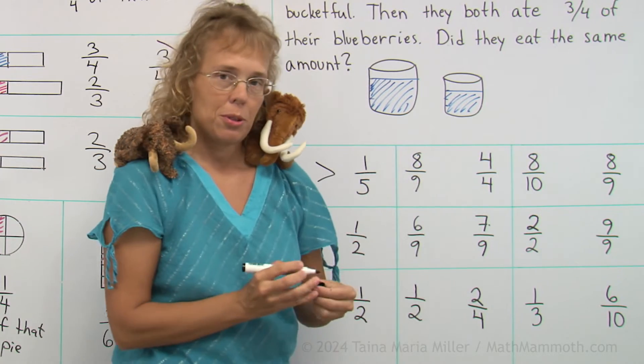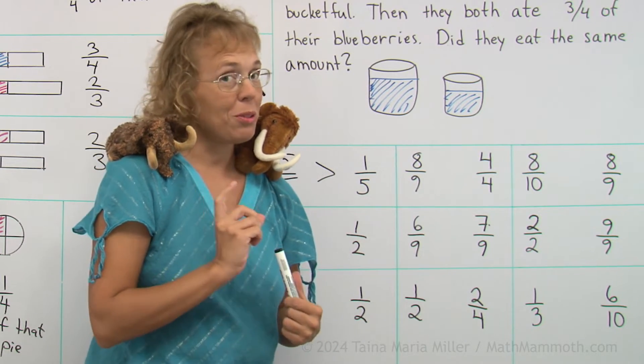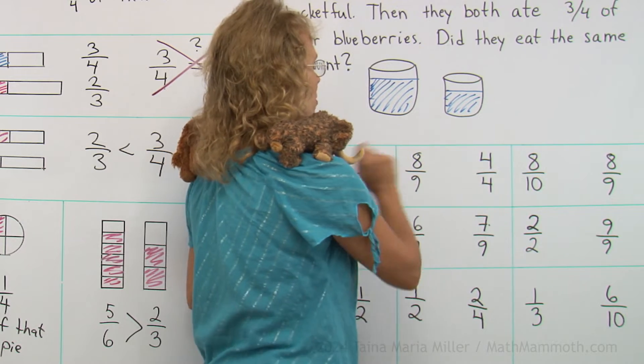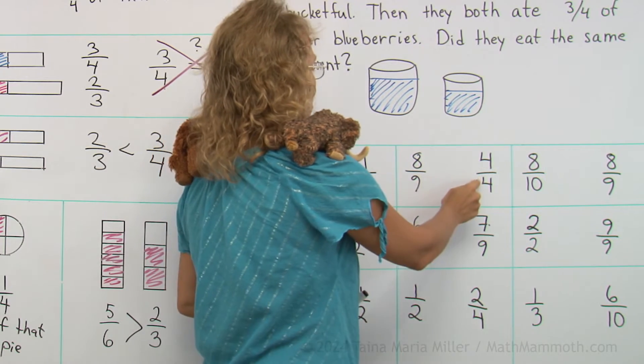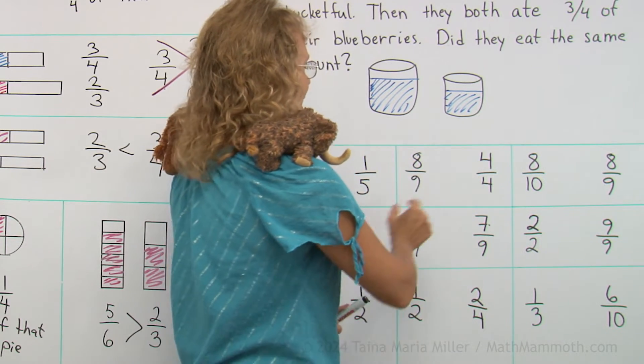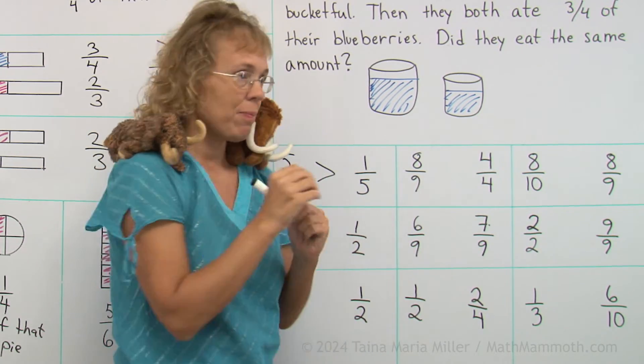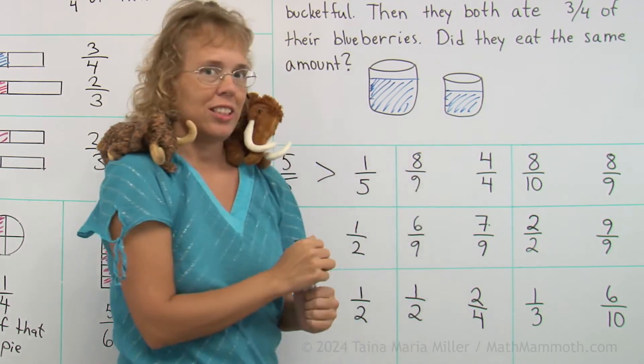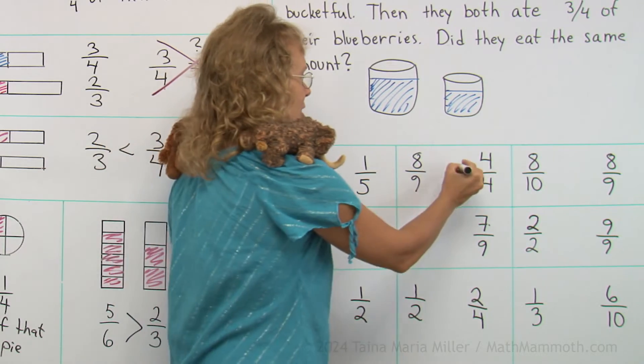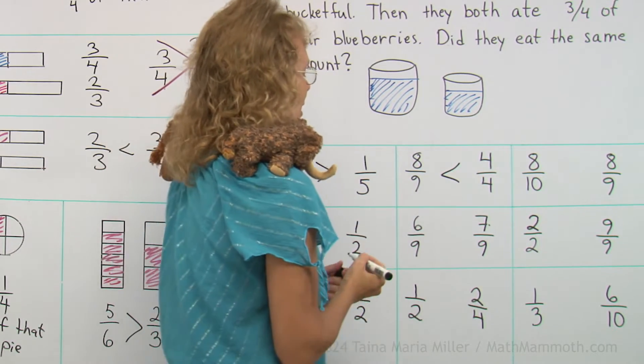Eight-ninths and four-fourths. Don't get fooled and think that, oh, eight is a bigger number than four, or nine is a bigger number than four. Four-fourths is actually equal to one, one whole pie, right? Eight-ninths is not. It is less than one pie. So that's how it goes. Eight-ninths is less.